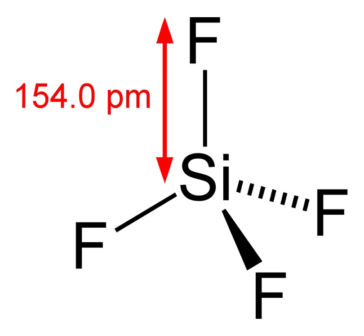The corresponding germanium fluoride is prepared analogously, except that the thermal cracking requires 700 degrees Celsius. Silicon fluoride can in principle also be generated by the reaction of silicon dioxide and hydrofluoric acid, but this process tends to give hexafluorosilicic acid.